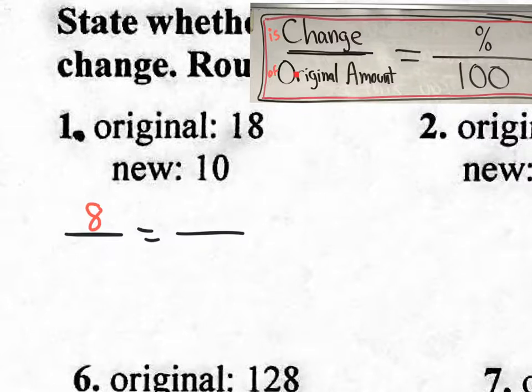Now, what else do we have on our notes? Original amount. Well, the original is 18. So let's put 18 down here. And then over here, we have percent over 100. I don't see any percents here. So I'm going to put X for the percent. And it's always going to be over 100, whether you have the percent or not. Percent means per 100. So now we're going to cross-multiply.